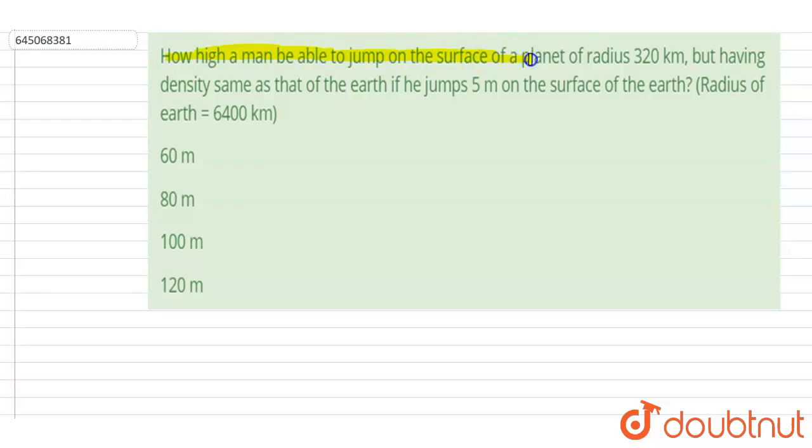Hello everyone. How high a man be able to jump on the surface of a planet of radius 320 kilometer having the same density as that of the earth, if he jumped 5 meter on the surface of earth? Radius of earth is given here 6400 kilometer.